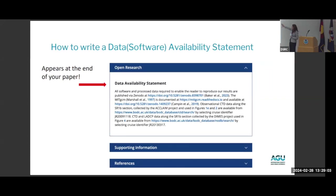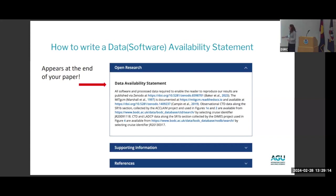At the end of every AGU paper, every Wiley paper, and a number of other publisher papers, you'll see an open research section containing a statement giving information about how to access the data and software underlying that paper. Some authors even link it to a specific figure in the paper so the data and figure are exactly linked, making it really easy for the reader to understand what's going on.